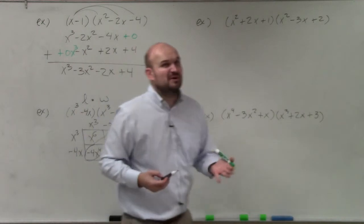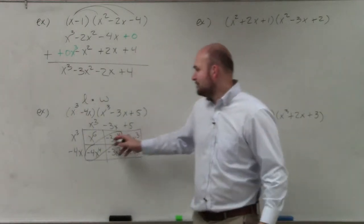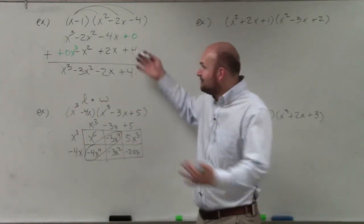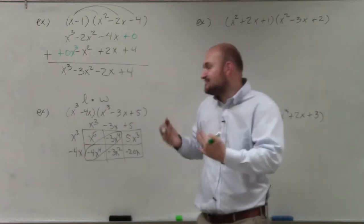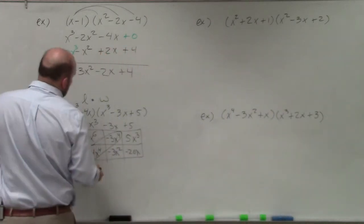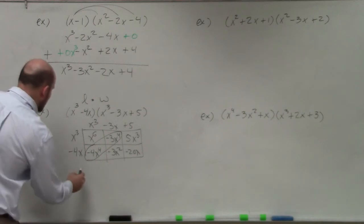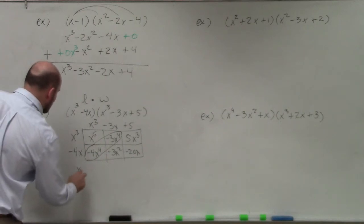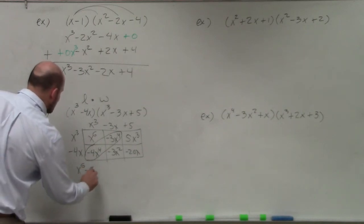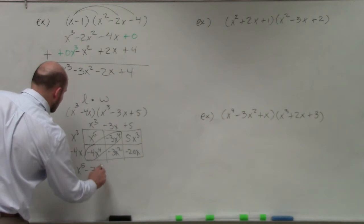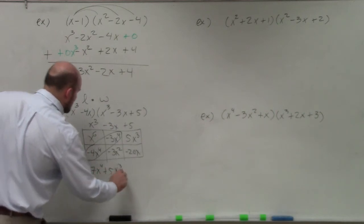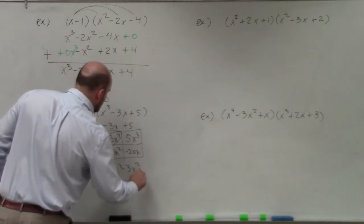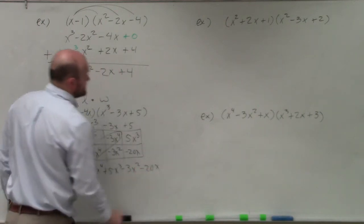We do have some common terms — only one set to combine. I like the box method because we can just find the like terms and write everything else out. So the final answer is x⁶ - 7x⁴ + 5x³ - 3x² - 20x.